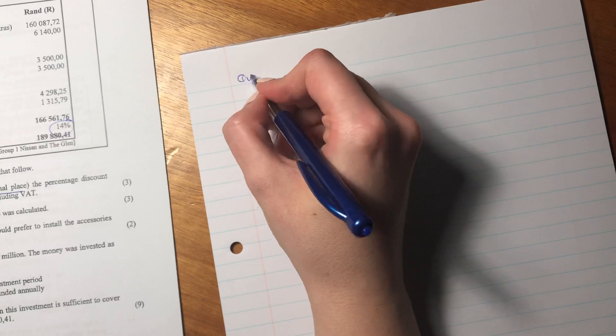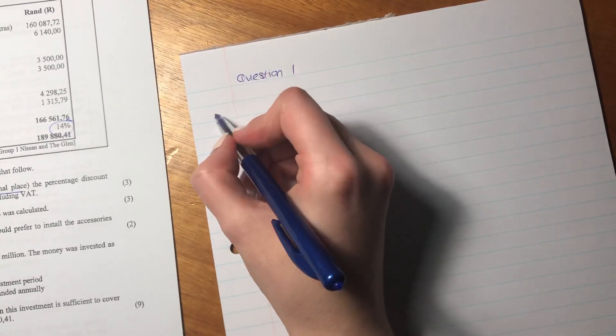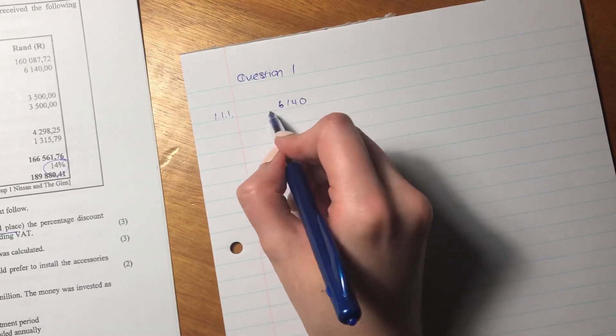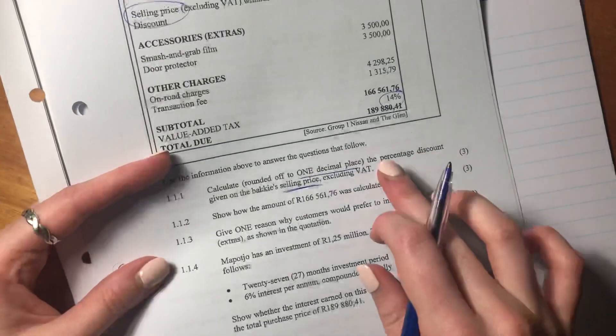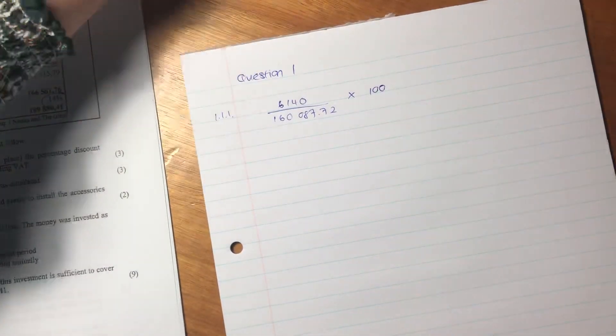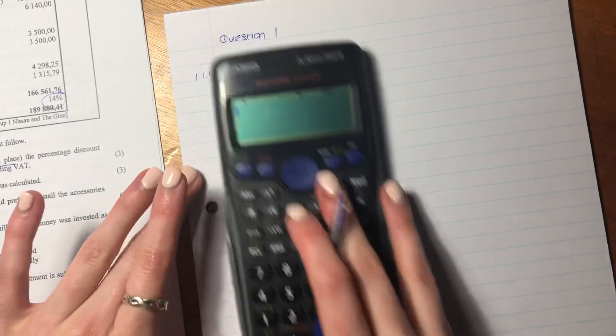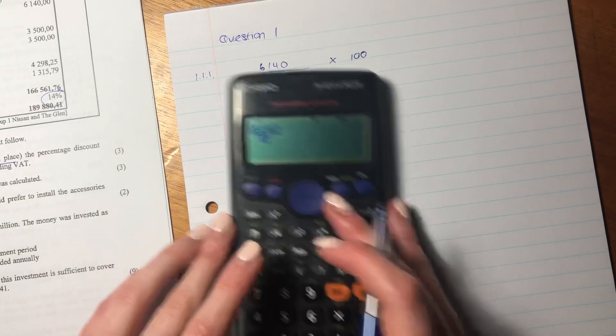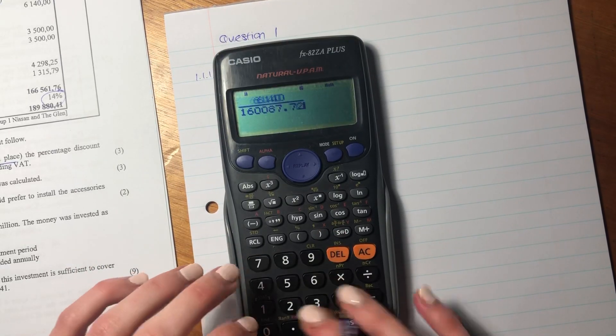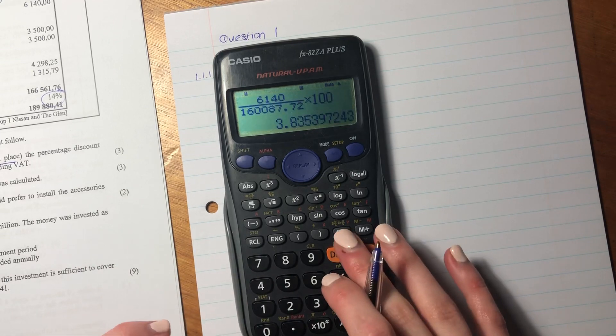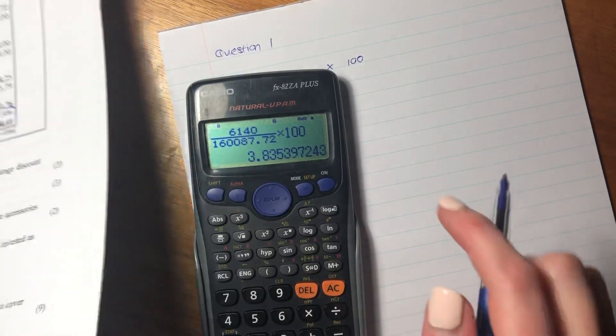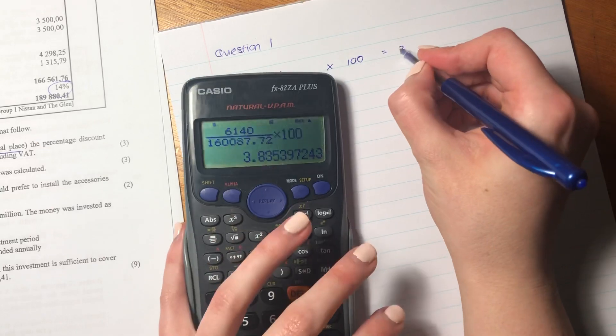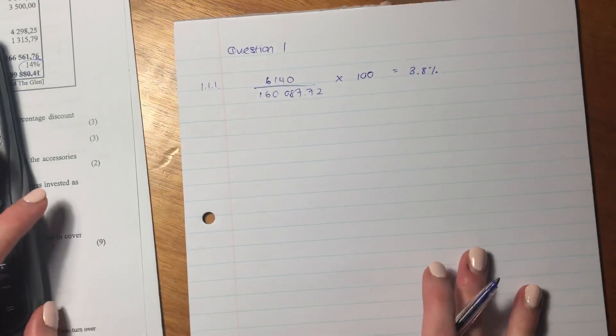So let's just quickly write that down. Question one, remember always to label. So the discount is 6,140 over the selling price, which is 160087.72, and it asks as a percentage, so we're going to times it by 100. Make sure that you are typing this correctly into your calculator. And it is 3.83%, but what format did it ask us for? One decimal place. So it's just going to be 3.8%.